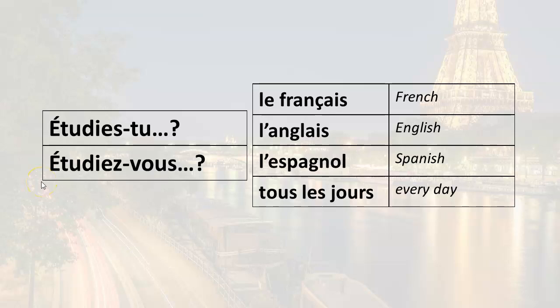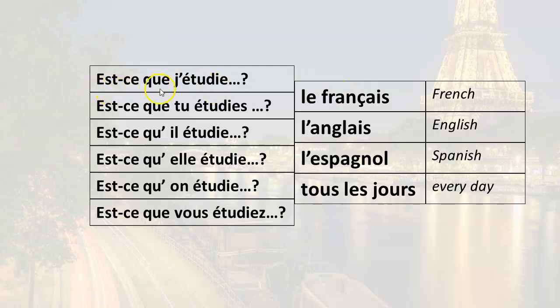One thing I'd like to mention about the reversing word order method is that it is valid and used by many French speakers, but it's considered a little more formal. The more common way of asking a question is to add the expression est-ce que before the subject pronoun and the verb. So for example, if I want to say do I study?, you add est-ce que before j'étudie and you have est-ce que j'étudie, which means do I study?